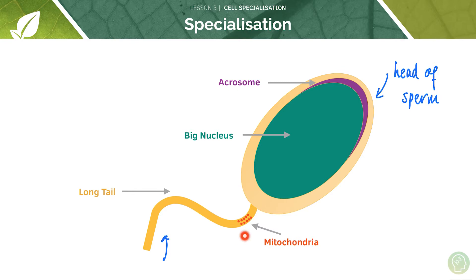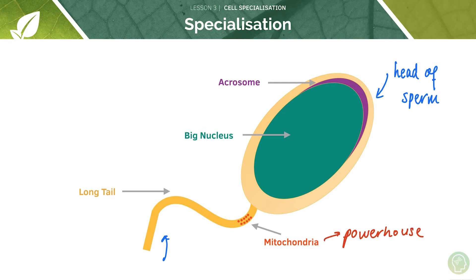We also have mitochondria. Mitochondria are the powerhouse of the cell, and the sperm cell obviously requires a lot of energy to move. That's why mitochondria are so important — you find lots of mitochondria in sperm cells because they provide energy for motility of the sperm.